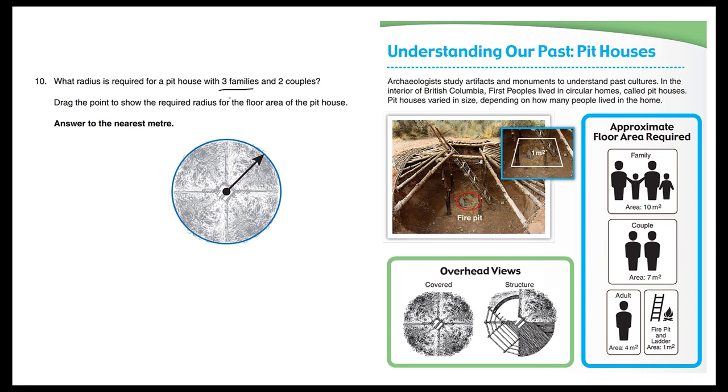Three families, what kind of area do we need? Let's look at this nice chart here. Families require 10 meters squared each. So 3 times 10 meters is going to be 30 meters squared required.